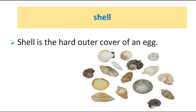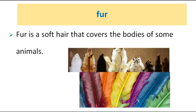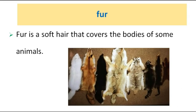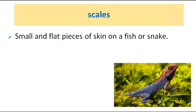Shell: the hard outer cover of an egg. Feathers: feathers cover a bird's skin and keep it warm. Fur: a soft hair that covers the body of some animals. To breed: to produce babies. Scales: small and flat pieces of skin on a fish or snake.